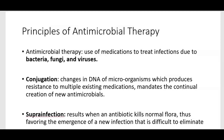Superinfection, sometimes called supra-infection as the slide shows, is a type of resistance that results when an antibiotic kills normal flora, thus favoring the emergence of a new infection that is difficult to eliminate. Normal flora is the normal healthy bacteria that's part of our body, and when an antibiotic kills off that good bacteria, it can lead to problems. A big one that we'll see is C. diff infections.